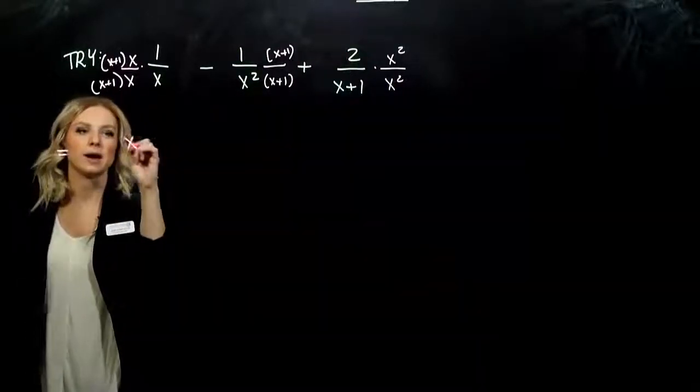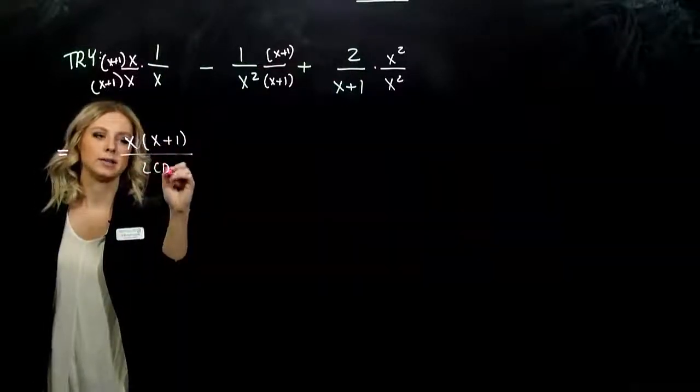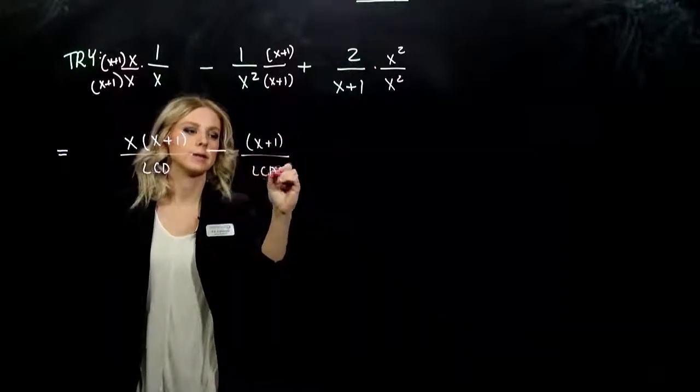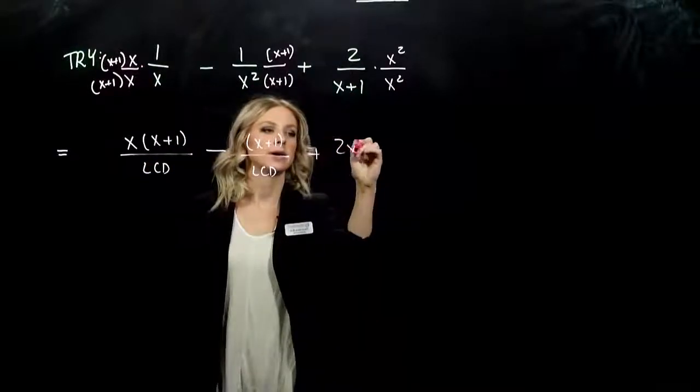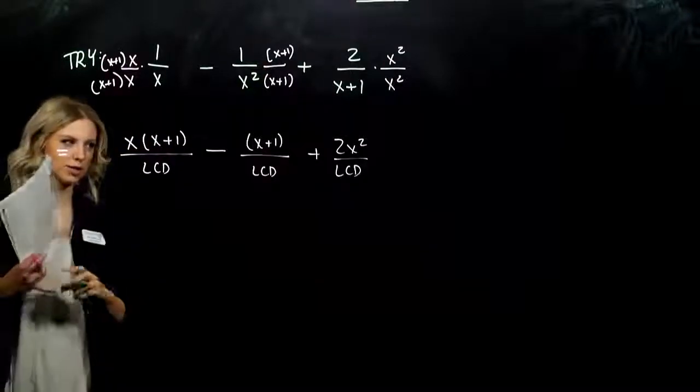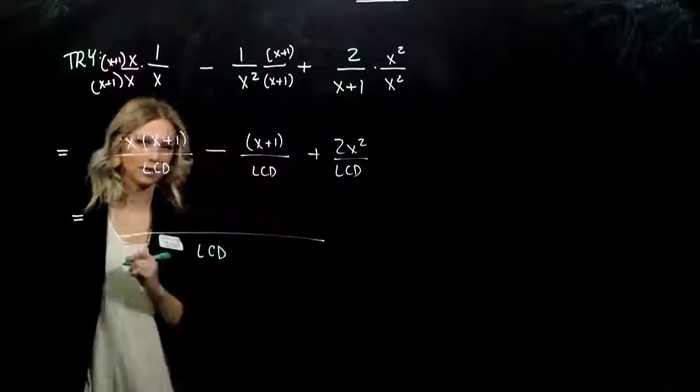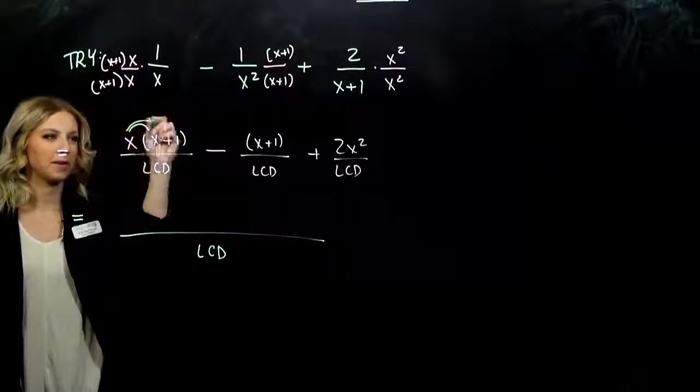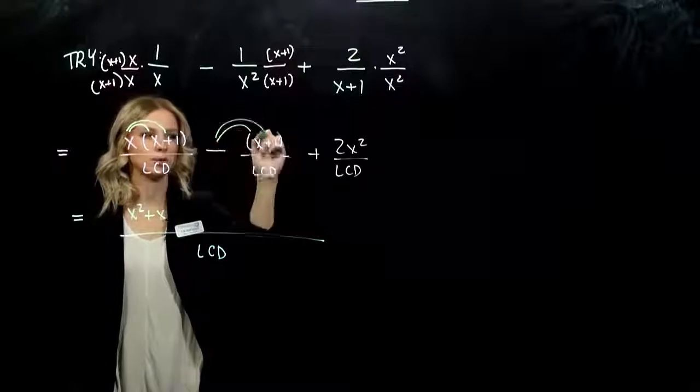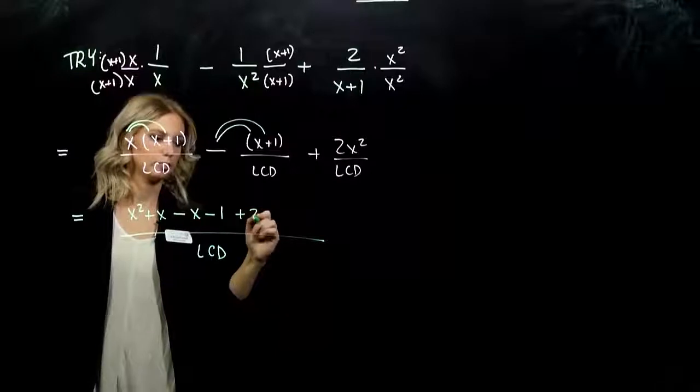As we simplify out, what do we have up top? X times x plus 1 over my LCD. Minus x plus 1 over my LCD. And plus 2x squared over my LCD. Let's start to simplify and combine like terms. Everything is all over that one common denominator. What do we have coming from our first term? X squared plus x. The negative has to distribute to both. So we get minus x minus 1. And plus 2x squared.